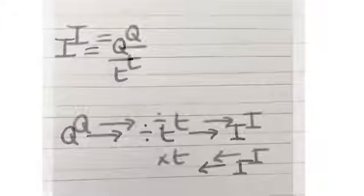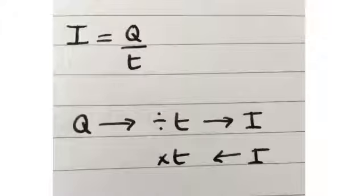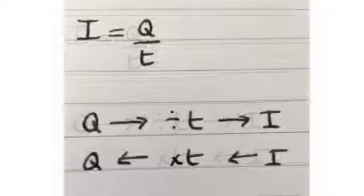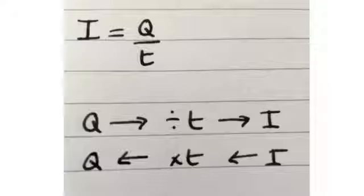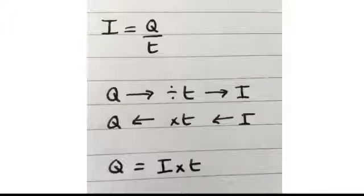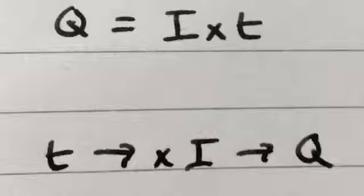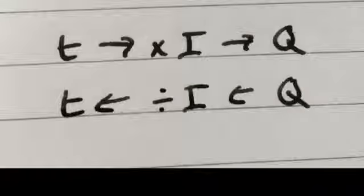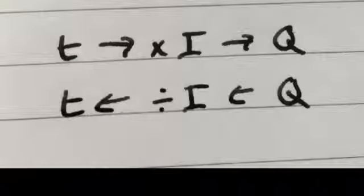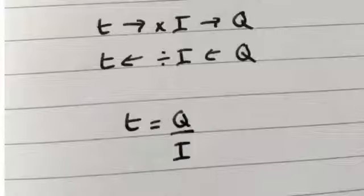Therefore, current, if we go back and do the opposite of dividing and times it by time, will take us to the answer for charge. So charge is the current times the time. First rearrangement complete. Then, now we can say, time, if we times it by current, it will take us to charge. Therefore, charge, if we do the opposite thing and divide it by current, that will take us to time. So charge divided by current is time, or time is charge divided by current. We've rearranged our equation both ways.